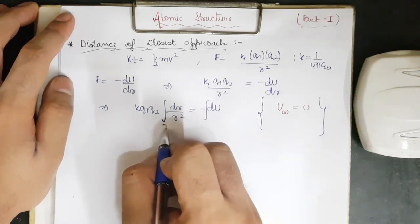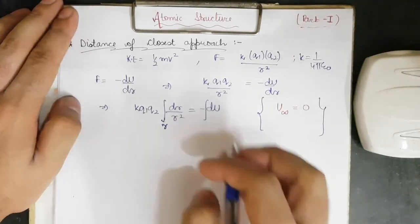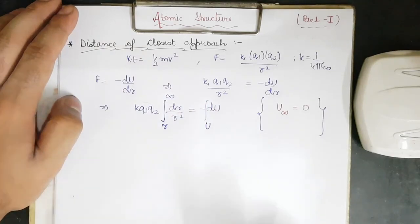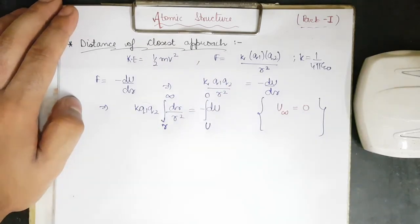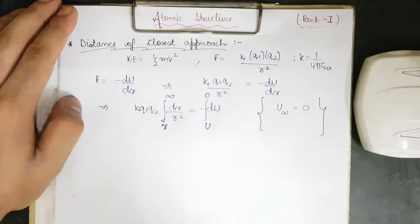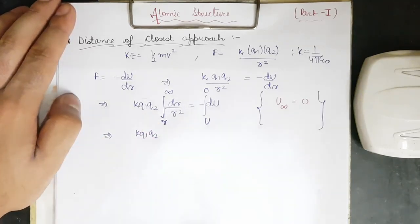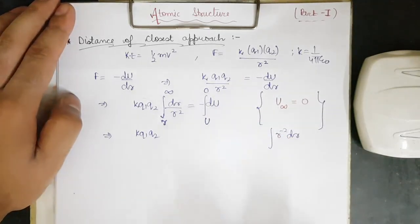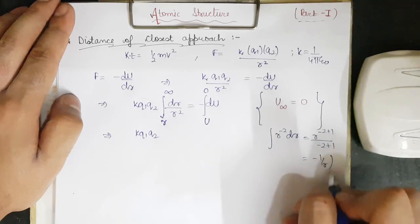Let us set up the limits. At some position r, the potential energy of the system is U. As r tends to infinity, the potential energy equals zero. So we integrate from r to infinity on the left side. Try not to cram anything in 11th and 12th class — otherwise you will face problems in the main examination. The integration of dr over r squared is the integral of r to the power minus 2 dr.